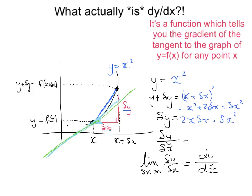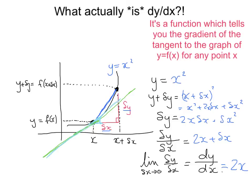Now dividing everything by delta x gives the gradient of the chord: delta y over delta x equals 2x plus delta x. Then taking the limit as delta x goes to zero, delta x disappears and we're left with 2x. So dy by dx equals 2x — you can think of it as the 2 coming down and the power reducing by 1. But really this is what's going on inside all differentiation.